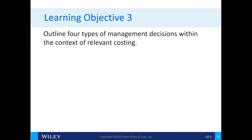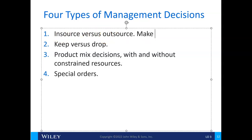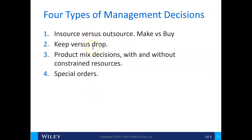There are four types of management decisions within the context of relevant costing. First, insource versus outsource, also called make versus buy. Second, do we keep a product line or drop it? If a product line looks like it's losing money, should we get rid of it? Third, product mix with or without constrained resources. And fourth, special orders.